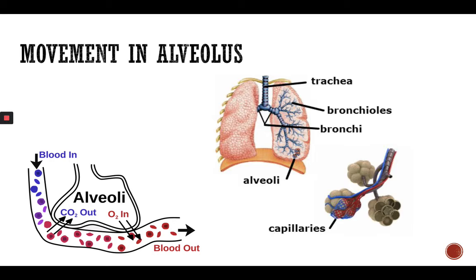Movement in the alveolus — as air passes through the trachea, bronchi, and bronchioles, at the end of the bronchioles we have the alveoli. They are enclosed with capillaries where the diffusion of gas actually happens. Carbon dioxide moves into the alveoli and exits the body, while oxygen gets into the blood through the alveolar and blood vessel membranes.